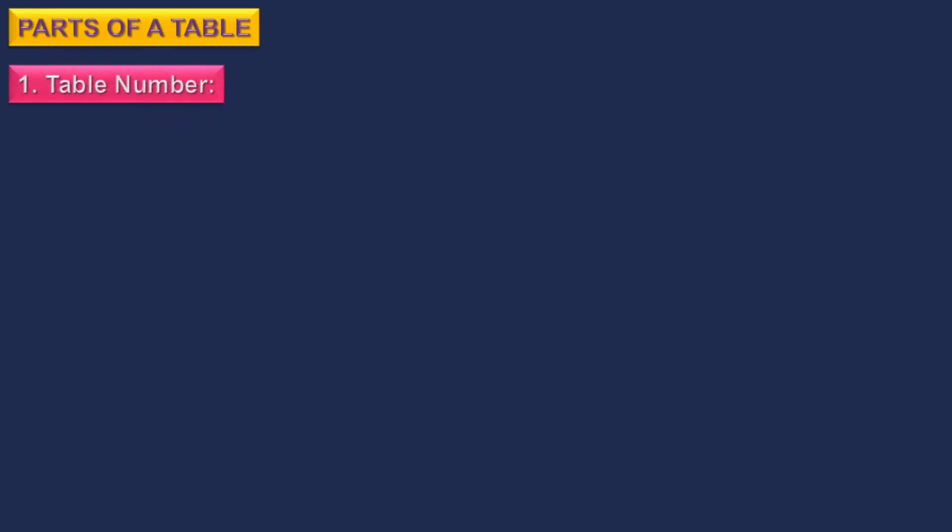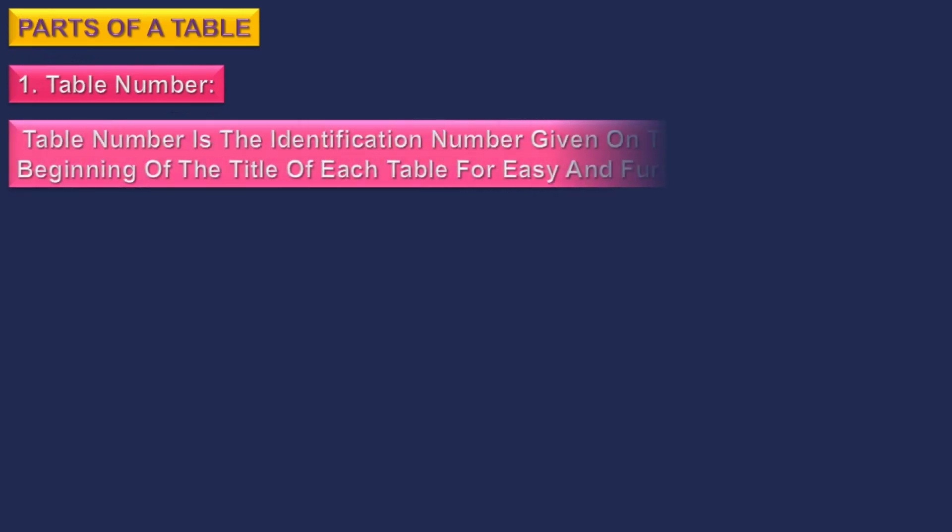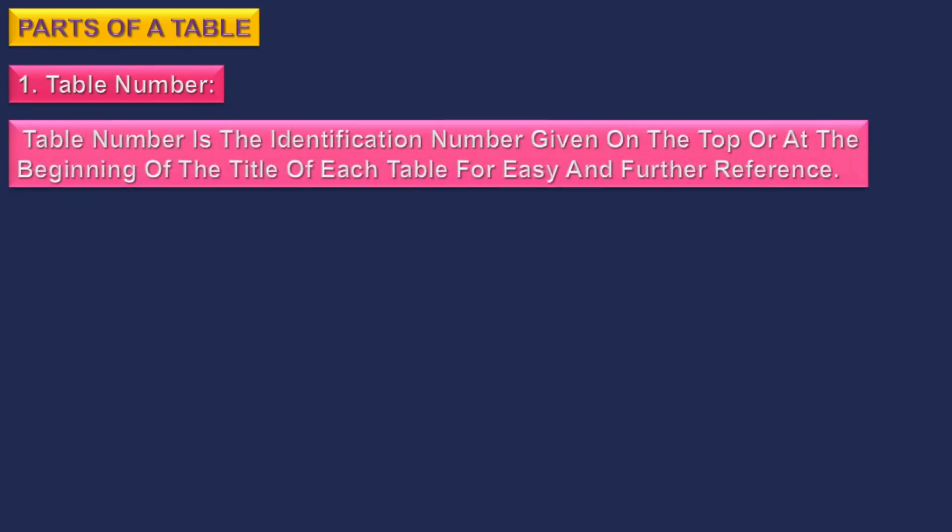Parts of a Table: 1. Table Number — the identification number given on the top or at the beginning of the title of each table for easy and further reference.